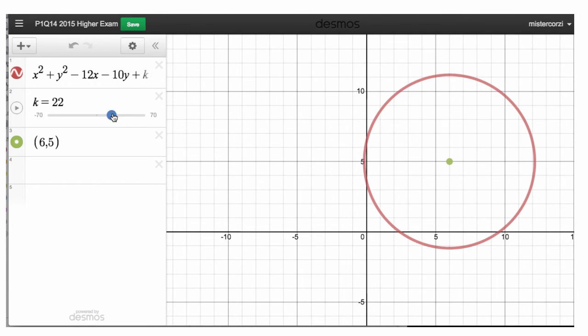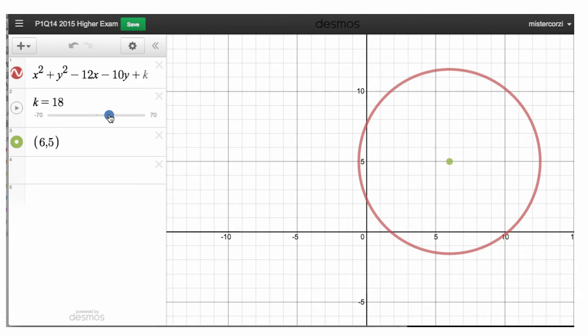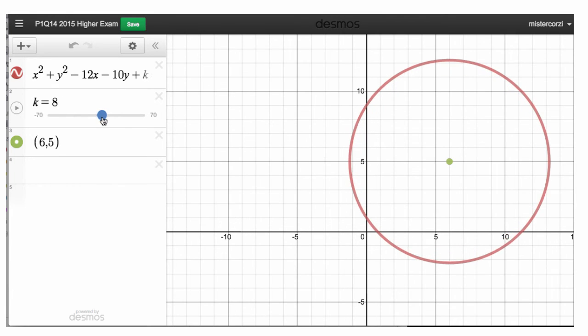if we keep increasing the size of the circle, look what happens. We've now got one, two, three, four points of intersection. Let's continue. And something happens, interestingly.